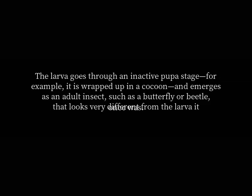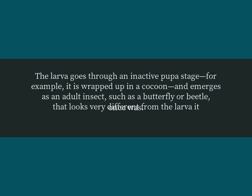The larva goes through an inactive pupa stage — for example, it is wrapped up in a cocoon — and emerges as an adult insect, such as a butterfly or beetle, that looks very different from the larva it once was.